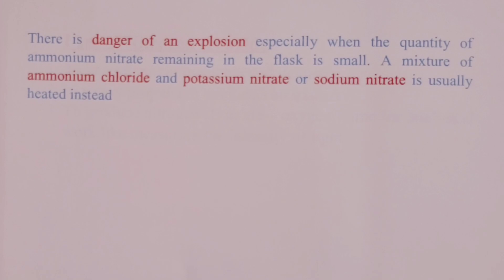Now, it is worth noting that there is danger of an explosion in our round-bottomed flask. Especially when the quantity of ammonium nitrate remaining in the flask is small. To prevent this, we usually heat a mixture of ammonium chloride and potassium nitrate or sodium nitrate as a safer method of obtaining nitrogen (I) oxide.